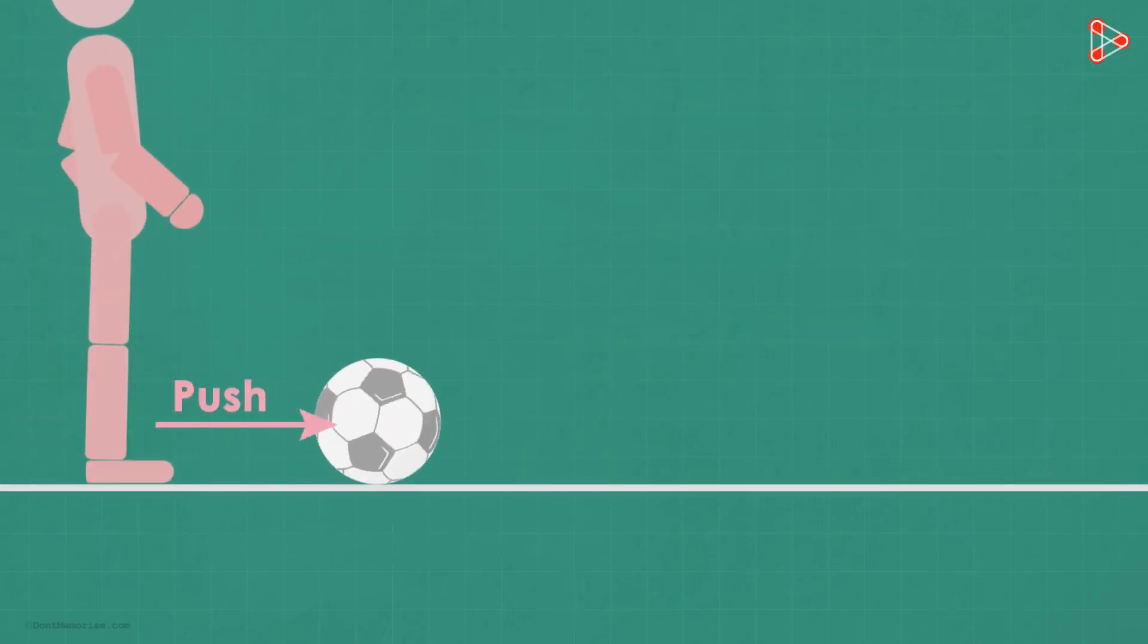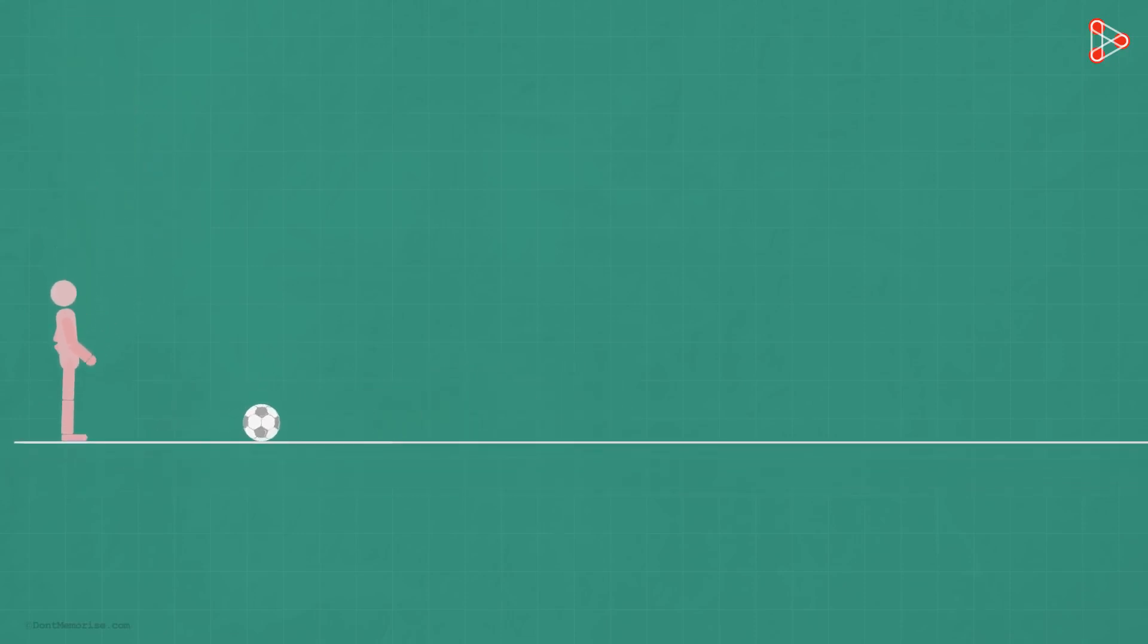So now let's say a person softly kicks the ball. What happens then? Yes, the position of the ball changes. Why did the position change? It's because there was another magnitude of force acting on it, and this time the forces were not balanced. The ball moved and there was displacement.